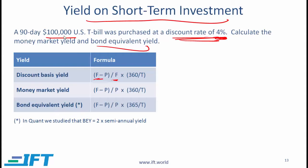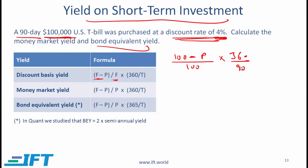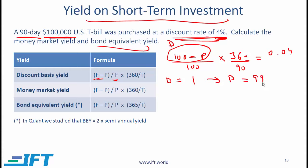The face value or par value is $100,000. For simplicity, I'll just work in thousands. The formula is: 100 minus the price that you pay — this is the discount — divided by the face value of 100, times 360 over T. T is the time remaining to maturity. For a 90-day T-bill, that would be 90. This equals 4% or 0.04. The 100 minus P represents the discount, and if you do the math you should get discount equal to 1,000, which means the price that you are paying is equal to 99,000.